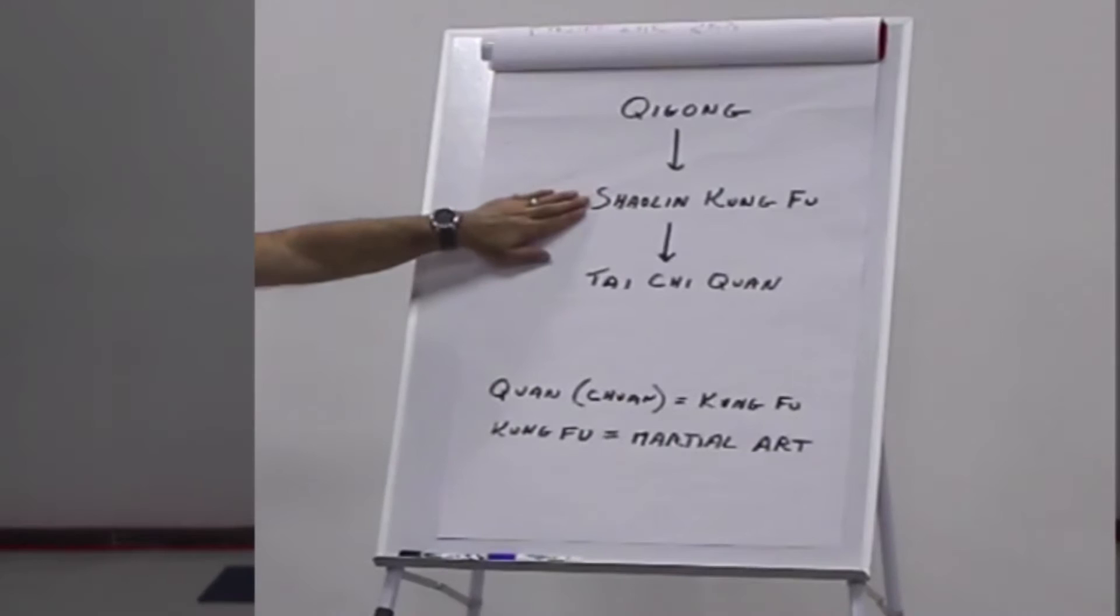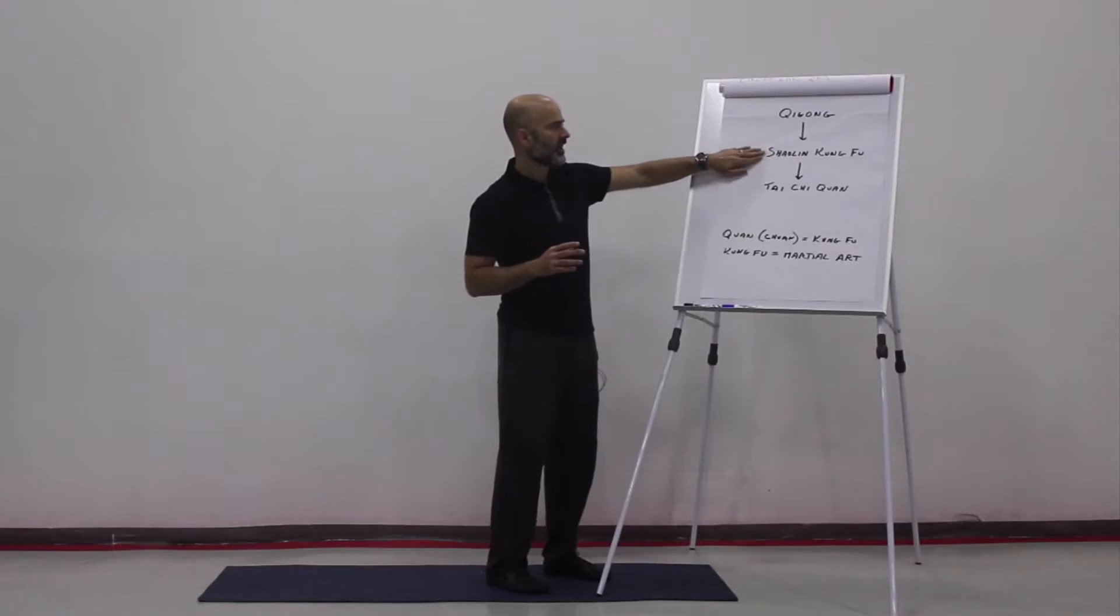Right around the 6th century AD, so mid-500s, maybe into 600, is when Shaolin Kung Fu was probably born. There was qigong already at the Shaolin Temple, and it started to turn into Shaolin Kung Fu.